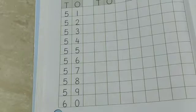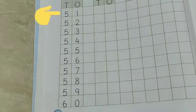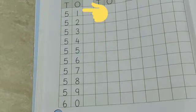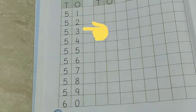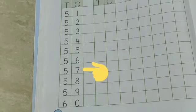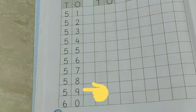Now let's read forward counting from 51 to 60. Children, as you know, T means 10s and O means 1s. 51, 51, 52, 52, 53, 53, 54, 54, 55, 55, 56, 56, 57, 57, 58, 58, 59, 59, 60, 60.